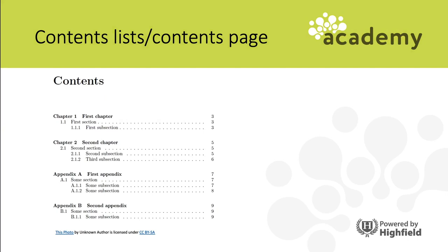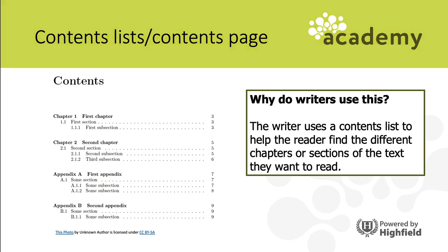Why does a writer use a contents list? Contents lists help the reader to find the different chapters or sections of a text they want to read. Typically a contents page is at the start of a text and outlines the different chapters or sections within it, allowing the reader to find the specific pages where they might find information that is relevant or important to them.